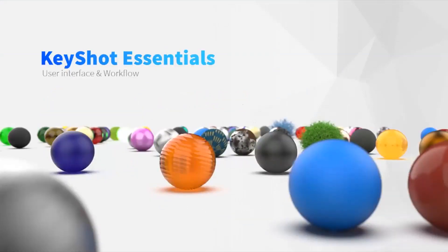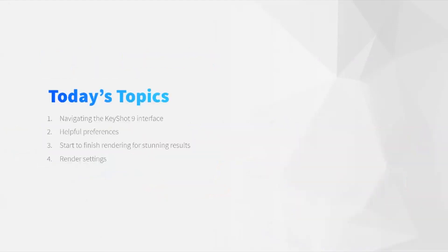Let's go over what we're going to cover today: user interface and workflow. Hopefully we'll be able to help you get through rendering and make a beautiful render within just a few minutes. Today's topics are: navigating the Keyshot 9 interface and some new features, helpful preferences to speed up your render process, start-to-finish rendering with stunning results — walking through adding materials, changing lighting, adjusting pins and HDRI — and render settings.